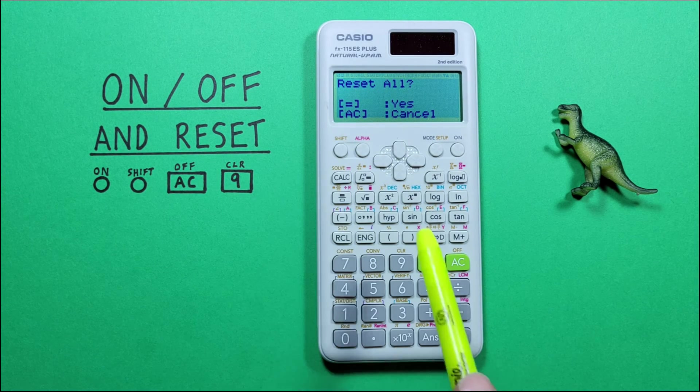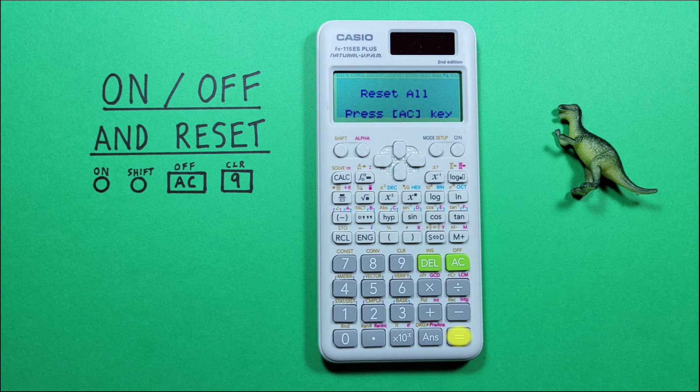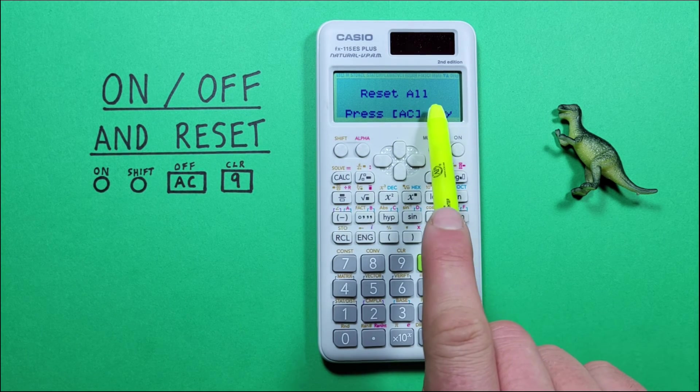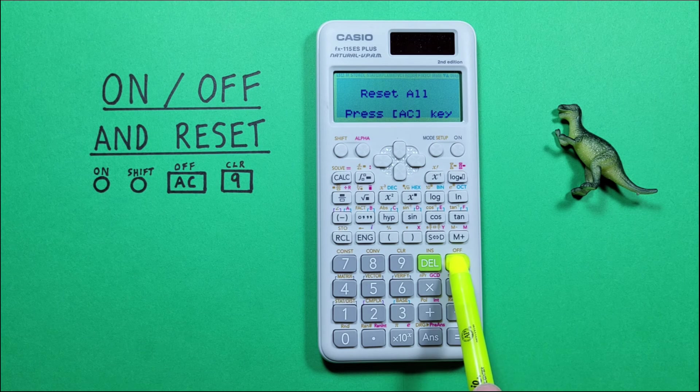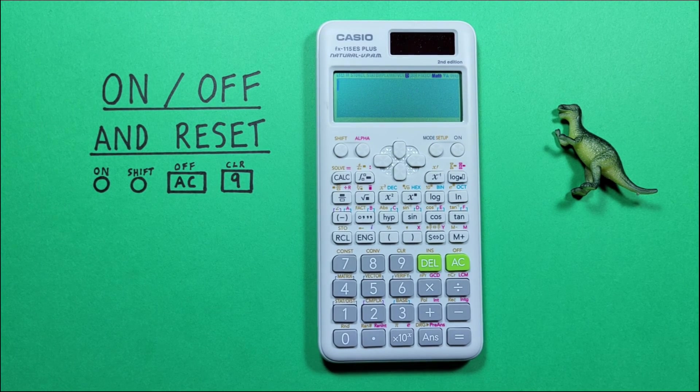Since we want to reset, we'll press equals. It'll give us this screen here, letting us know we're resetting ALL. And then we press the AC key again. And our calculator has been reset.